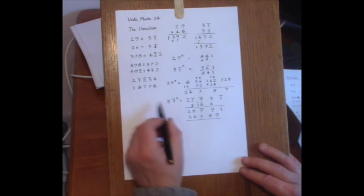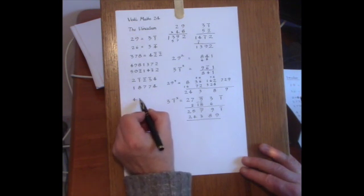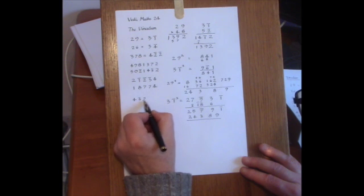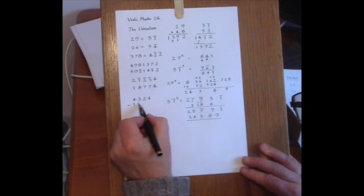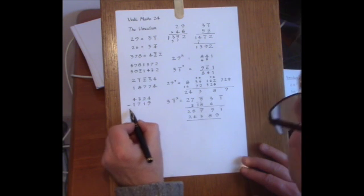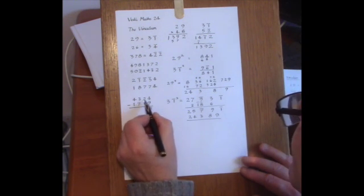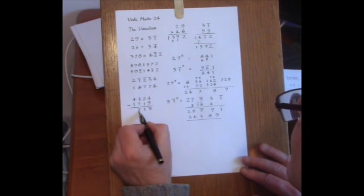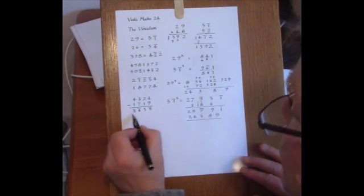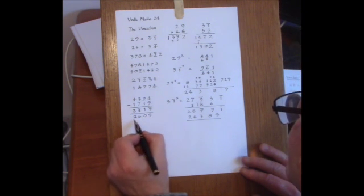You can even use winculums for just ordinary subtraction. Here's an example. 4, 3, 2, 4 minus 1, 7, 1, 9. 4 take away 9 is winculum 5. 2 take away 1 is 1. 3 take away 7 is winculum 4. And there we have a 3. And then we can de-winculate to give 2, 6, 0, 5 as the answer.